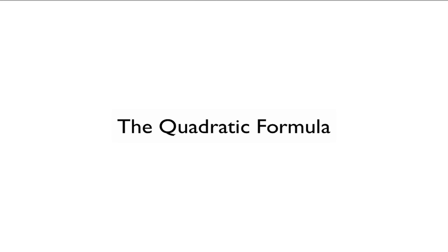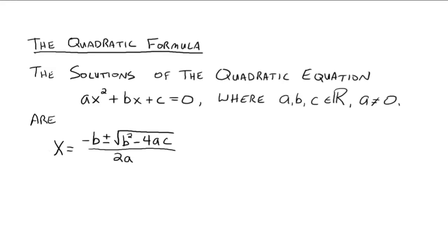This video is on using the quadratic formula to solve quadratic equations. Here's the formula: solutions of the quadratic equation ax squared plus bx plus c equals 0, where a, b, and c are all real numbers, but a can't be 0. Because if a was 0, then you'd be left with a linear equation, and that's easier to solve.